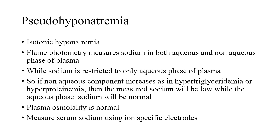Sodium is usually measured by flame photometry, which measures the whole plasma sodium including both aqueous and non-aqueous components. But sodium is restricted only to the aqueous phase. When the non-aqueous component increases, as in hypertriglyceridemia and hyperproteinemia, the measured sodium will be low, while the aqueous phase sodium remains normal. This is isotonic hyponatremia, differentiated by normal plasma osmolality, and the problem is resolved by using ion-specific electrodes that measure only aqueous phase sodium, giving the true serum sodium.